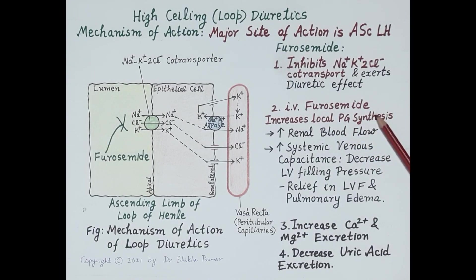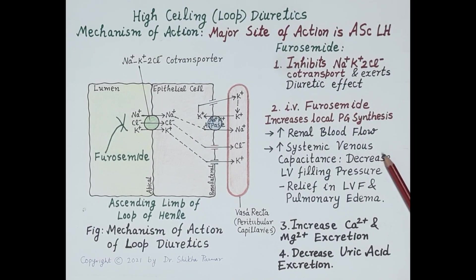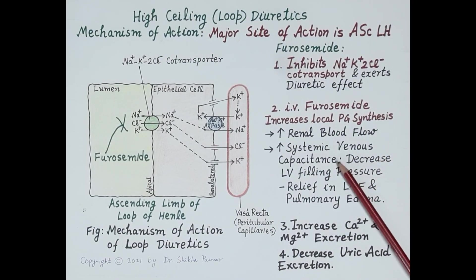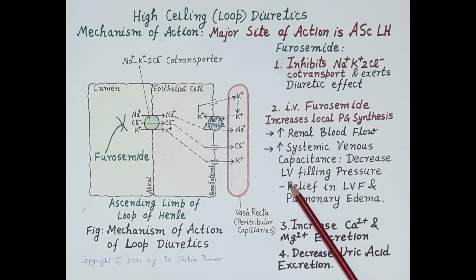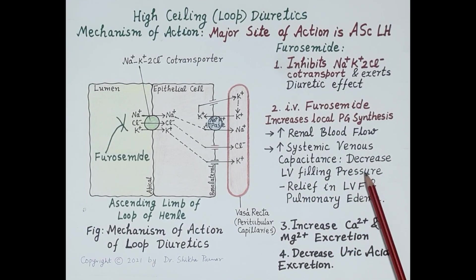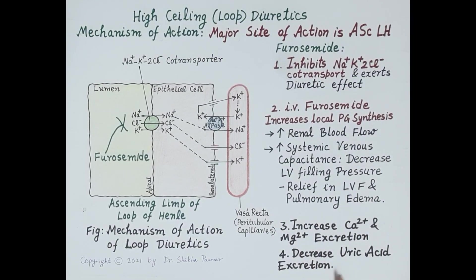These prostaglandins are vasodilators that dilate renal blood vessels, increasing renal blood flow. Additionally, dilation of veins increases systemic venous capacitance, and dilation of the superior and inferior vena cava decreases left ventricular filling pressure, providing relief in left ventricular failure and associated pulmonary edema. Furosemide also increases excretion of calcium and magnesium, while decreasing excretion of uric acid.